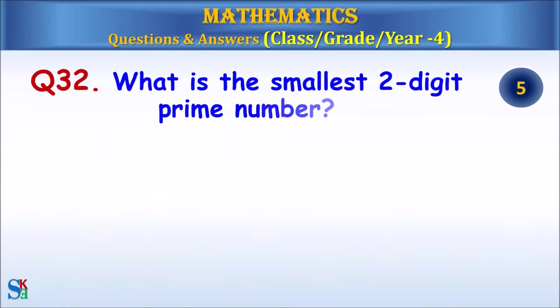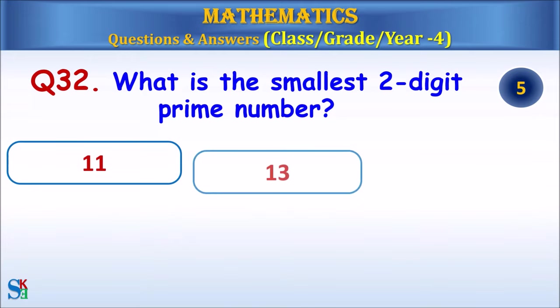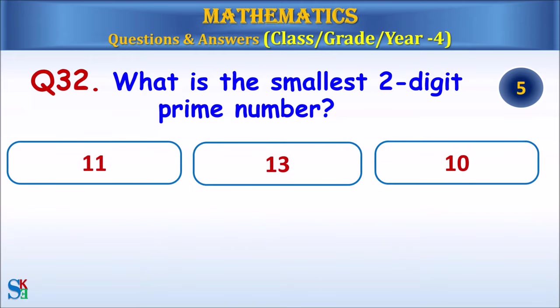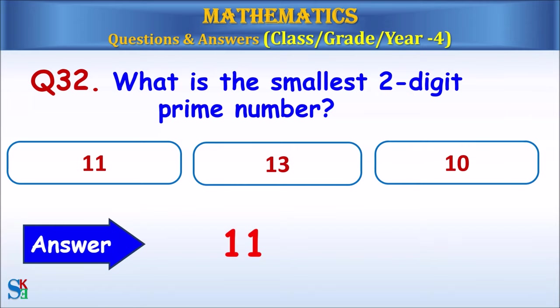Question 32: What is the smallest two-digit prime number? The answer is 11.